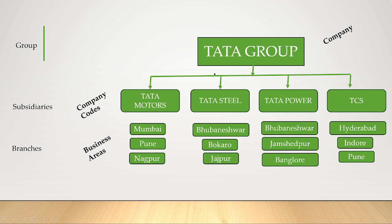These subsidiaries of Tata Group are known as company codes in SAP. Then, branches: Tata Motors has branches in Mumbai, Pune, Nagpur. Similarly, Tata Steel has branches in Bhubaneswar, Bokaro, Jaipur. Tata Power has branches in Bhubaneswar, Jamshedpur, Bangalore. TCS has branches in Hyderabad, Indore, Pune. All these branches are called business areas.